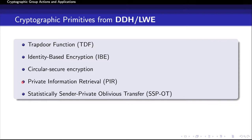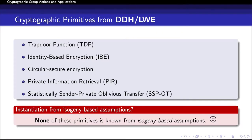On top of that, we know how to build slightly less-known primitives such as private information retrieval or circular secure encryption schemes from DDH or LWE. Even further, we have a construction of a relatively strong oblivious transfer protocol, namely statistically-sender-private OT, from these assumptions. Unfortunately, none of these primitives is known from isogeny-based assumptions.